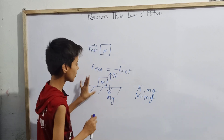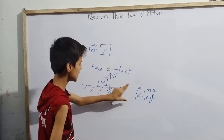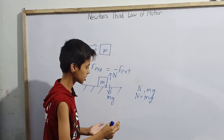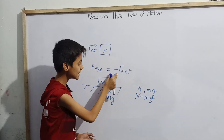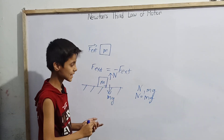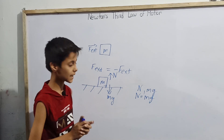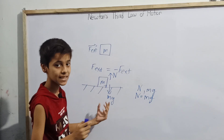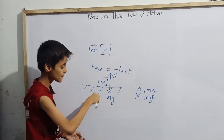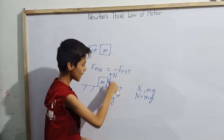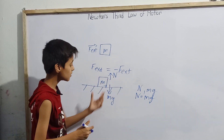Now let me tell you about the third condition. The first condition was that magnitude should be same and direction should be opposite. The second condition is that the nature of forces should be same. And the third condition is that the forces should act over two different bodies. But here we have only one body, and of that single body we have both Mg and N.